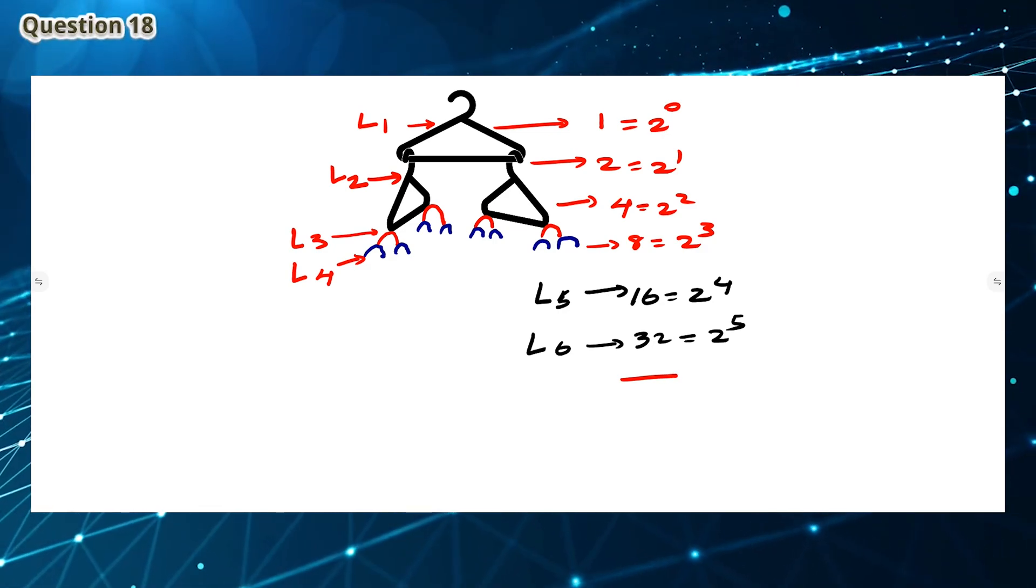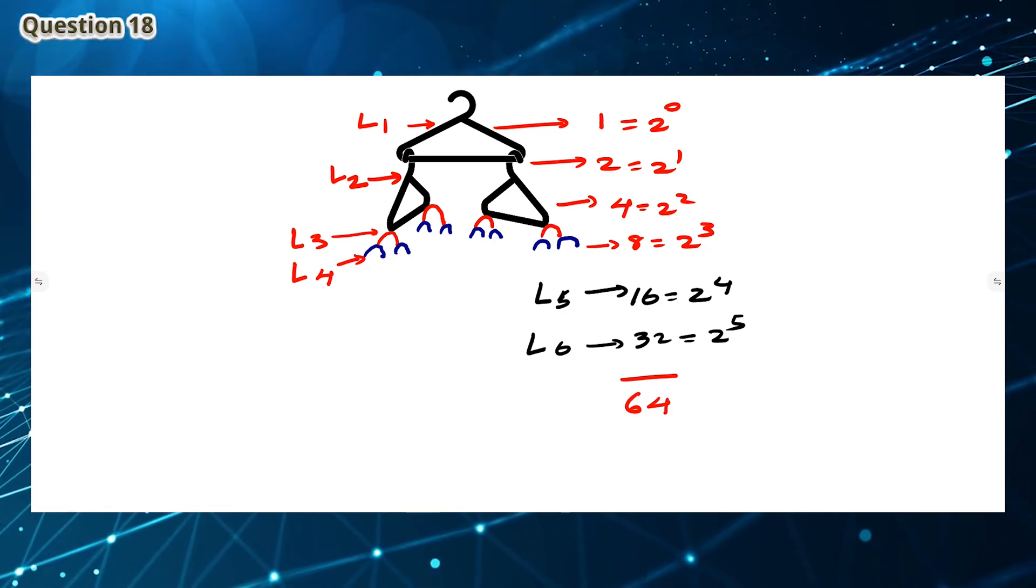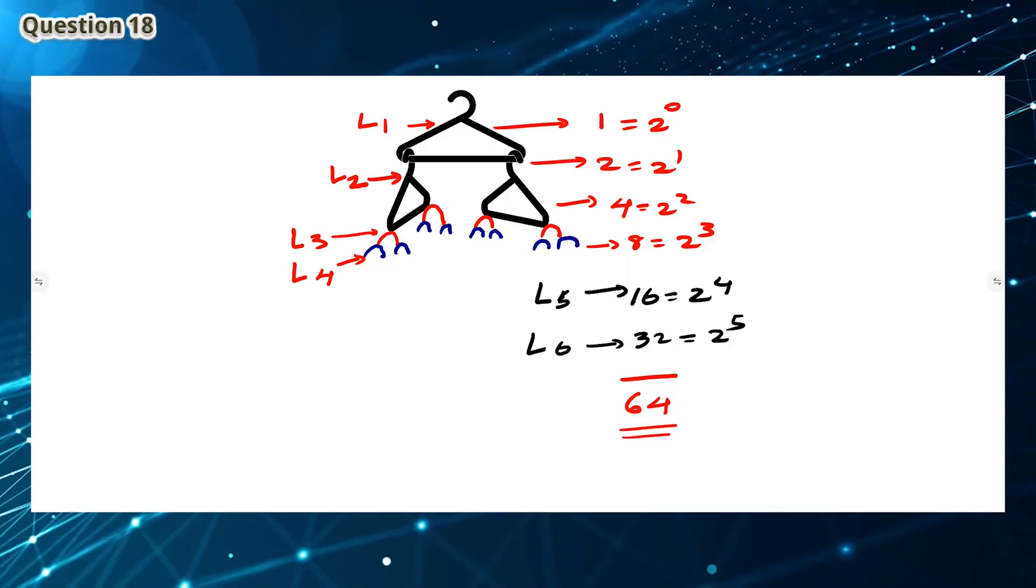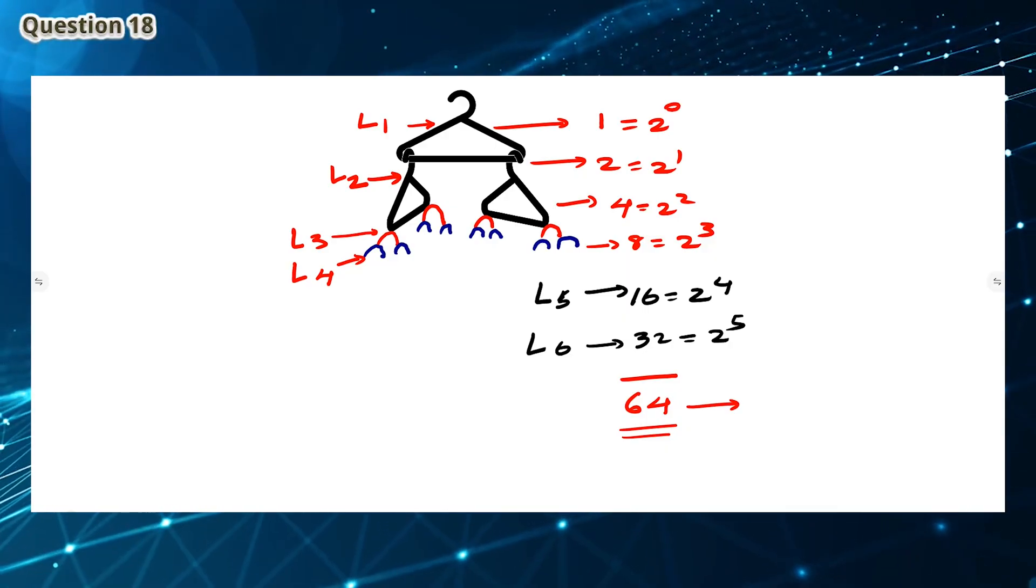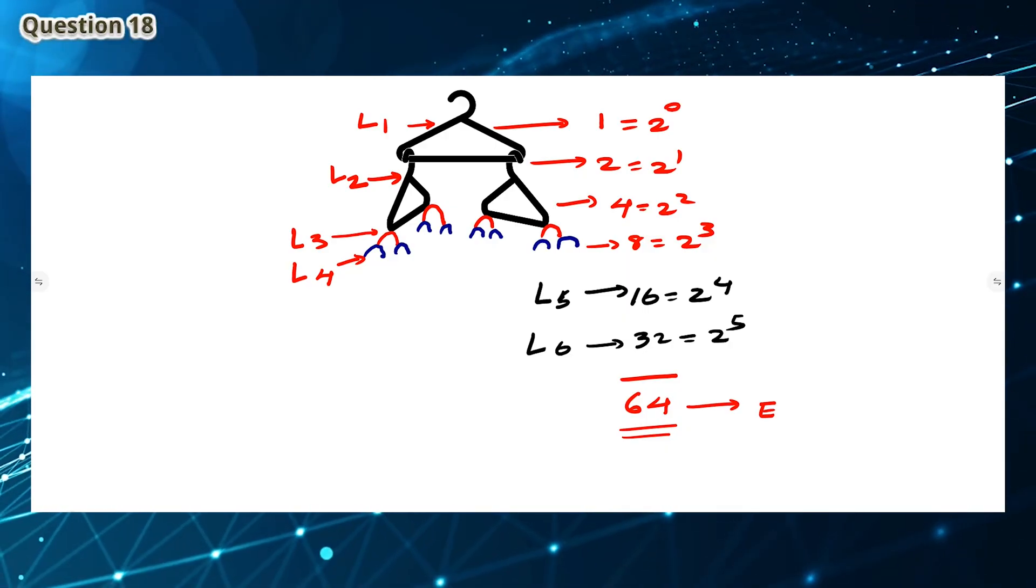You find that layer 6 has 32 or 2 to the power 5 coat-hangers. We can now add all this up to find a total of 64 coat-hangers in this pattern. This means the answer is E, which is between 60 and 70.